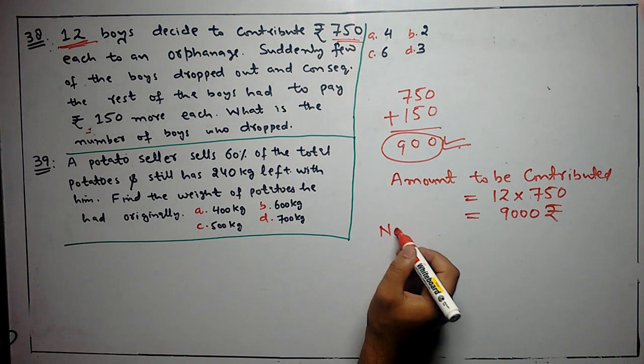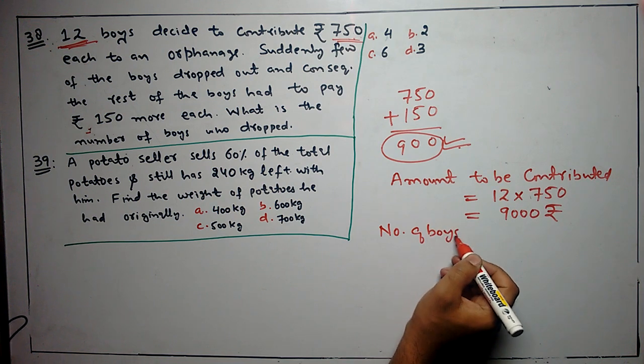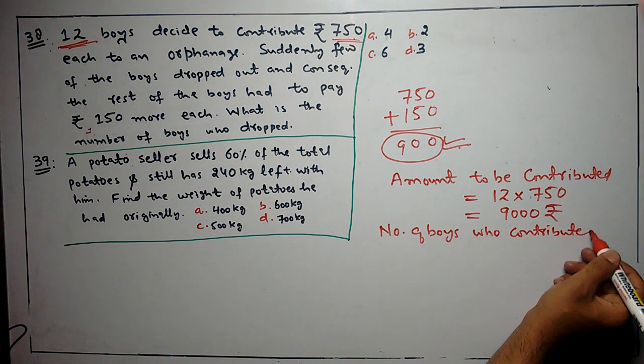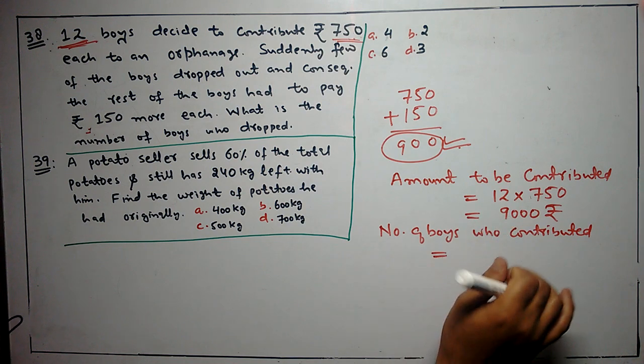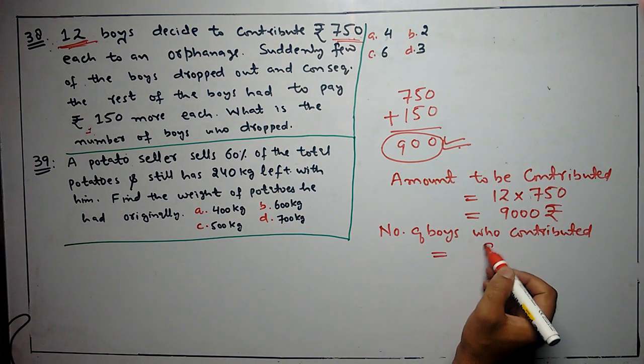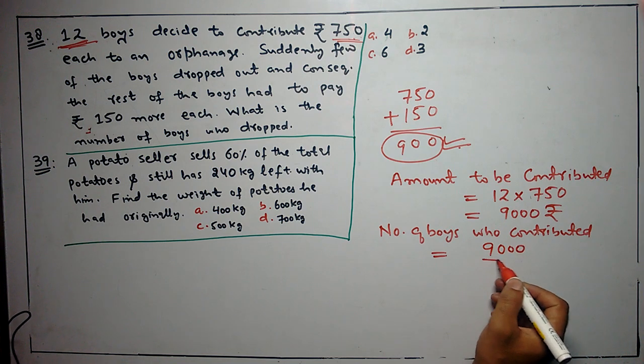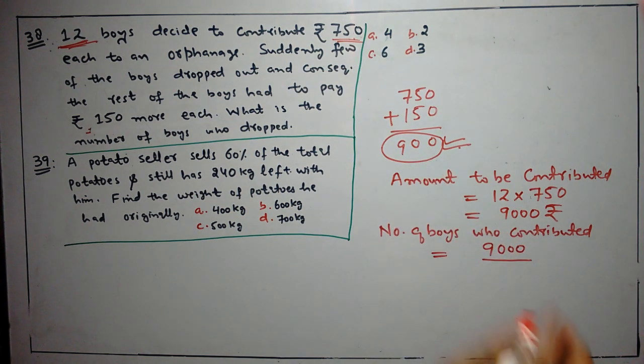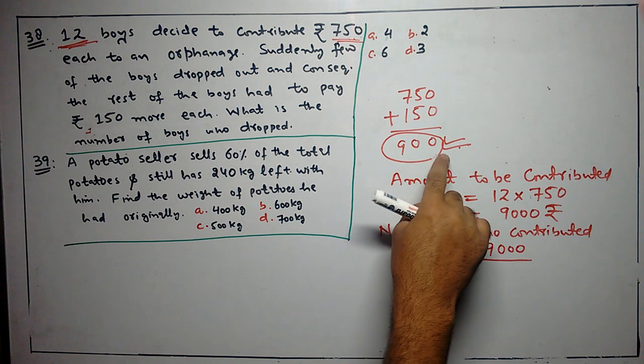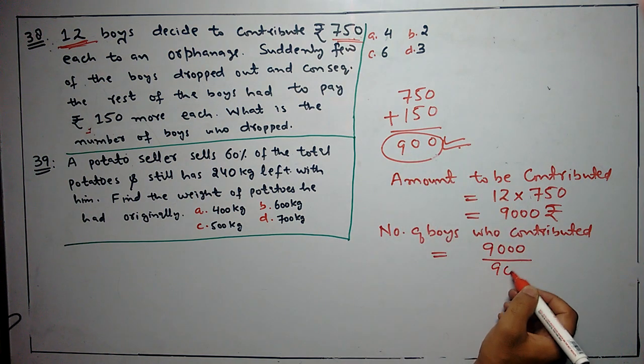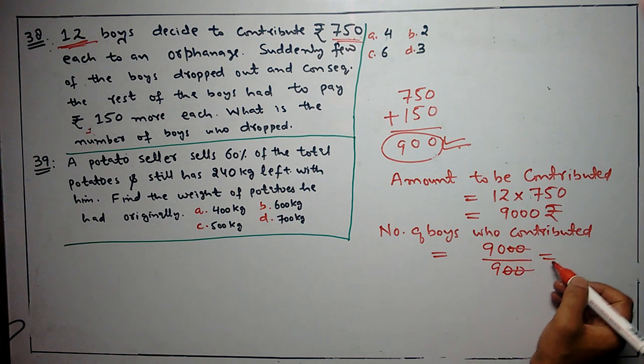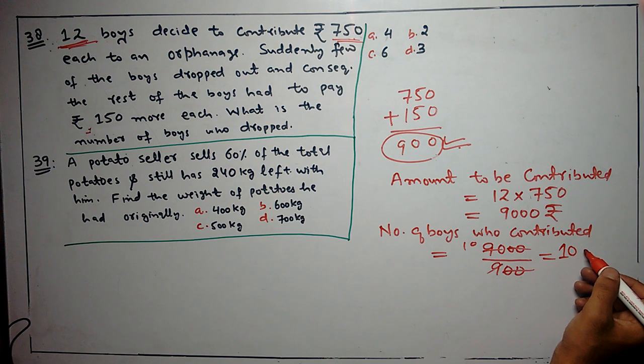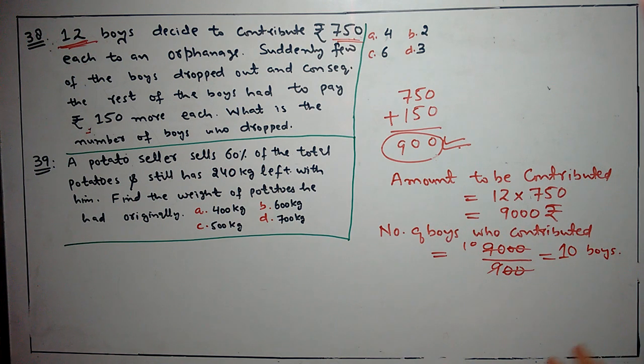We will write like this. Number of boys who contributed is equal to total amount, the actual contribution was 9,000. And we will divide that by 900, what the rest of the boys paid. That means we will find 9 into 9, so total 10 boys contributed all the contributions.